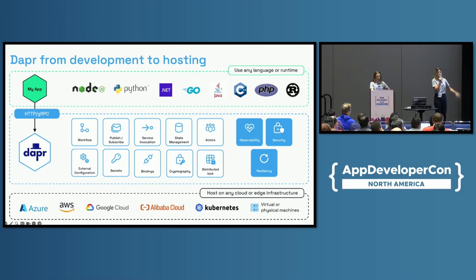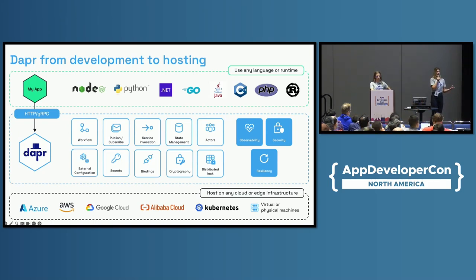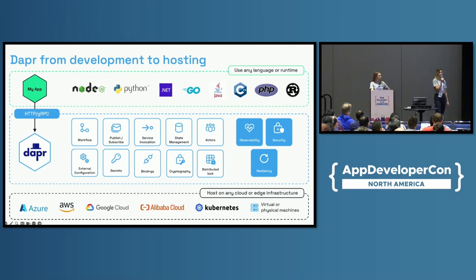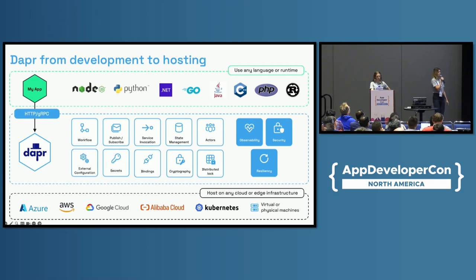A lot of these capabilities are provided out of the box through these DAPR best-practice building blocks. And last but not least, really focused on portability at the infrastructure layer. Ninety percent of users today in production run DAPR on top of Kubernetes. However, you can run this on your local machine or on a set of VMs — it isn't necessarily just isolated to Kubernetes.